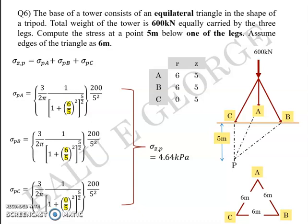So this problem can be called an application of the Boussinesq equation. Now moving to the next problem, quite similar. An elevated structure of 10,000 kilonewtons is supported by four legs of a tower in the form of a square of 6 meters side. You're asked to find the stress at a point 7 meters below the center of the entire structure.